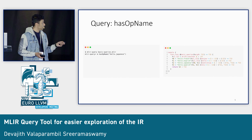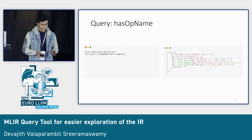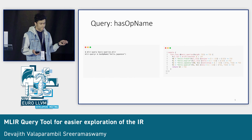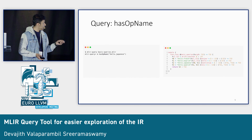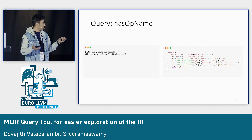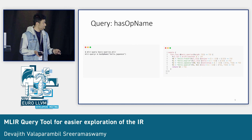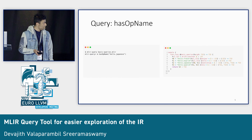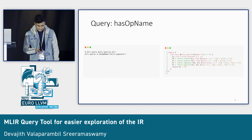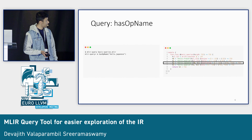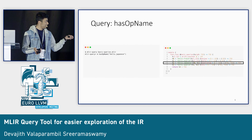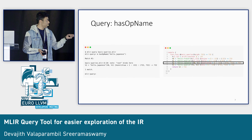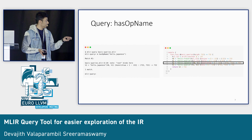So here we have 'm', which stands for match, like in Clang Query. For example: m hasOpName hello.japanese. What it means is it matches all the operations that have the op name hello.japanese. If you look on the right, we have a few languages, and hello.japanese is on one of those lines. And did MLIR Query get it right? Yes, it did — it says we have a match on line 6, and it prints the operation.